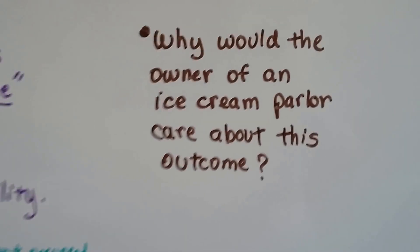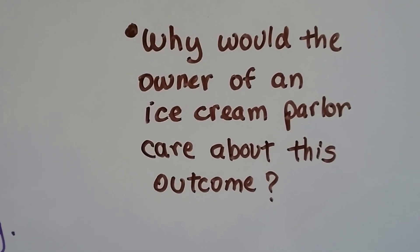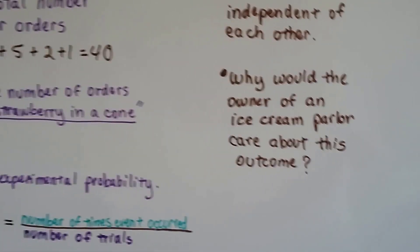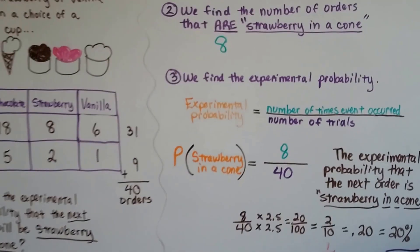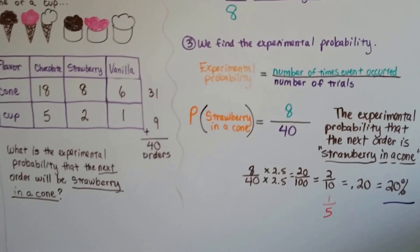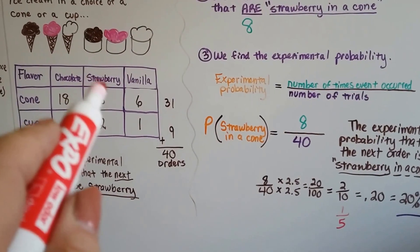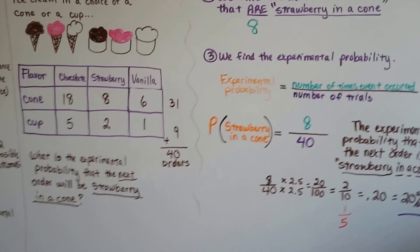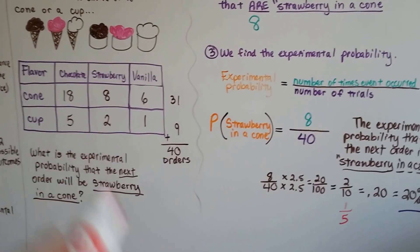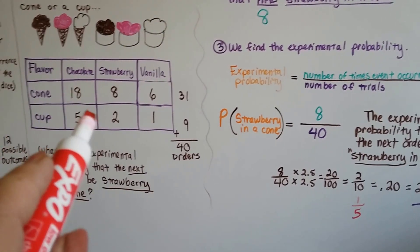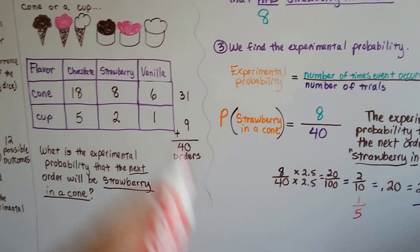Now, here's a good question. Why would the owner of an ice cream parlor care about this outcome? Do you think he would want to know that there's a 20% chance that that's going to be his next order? Well, yeah, because he'll know how much strawberry ice cream to order from the company, and how many cups or cones to order. And if he knows that there's this many chocolate, he knows to order more chocolate than vanilla.